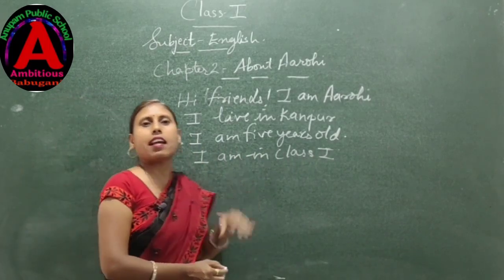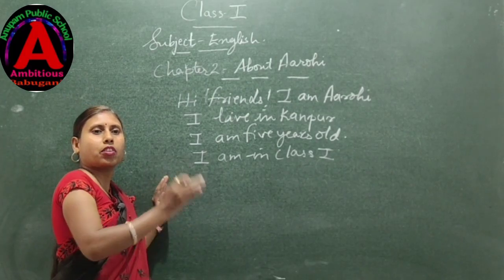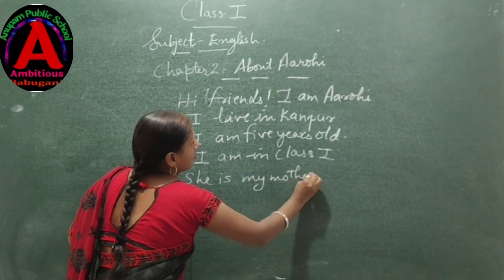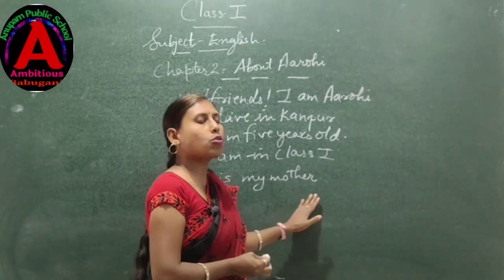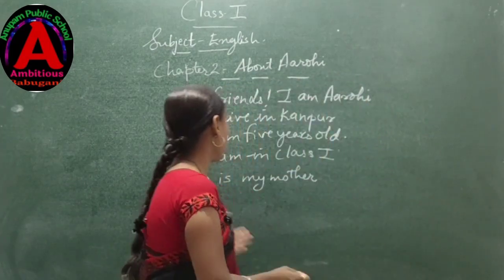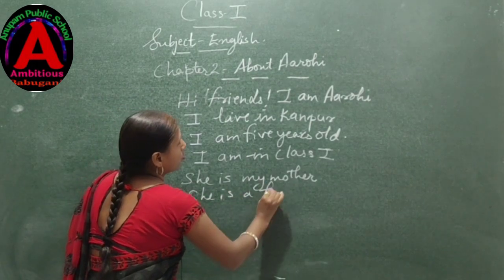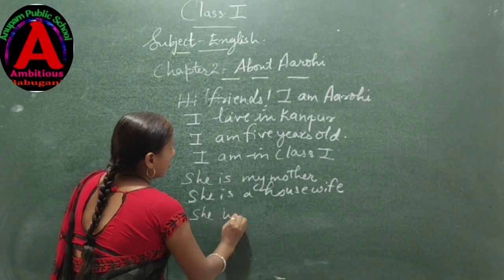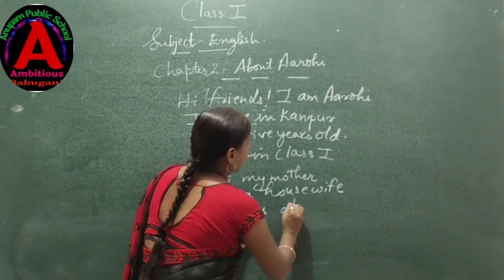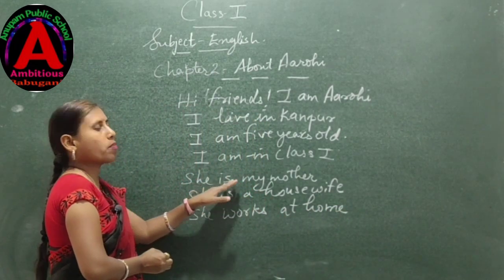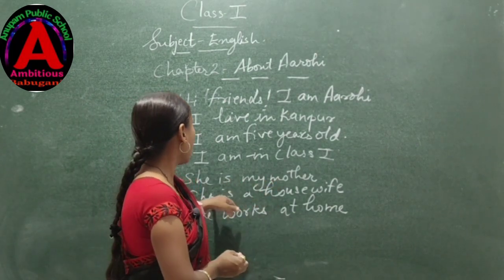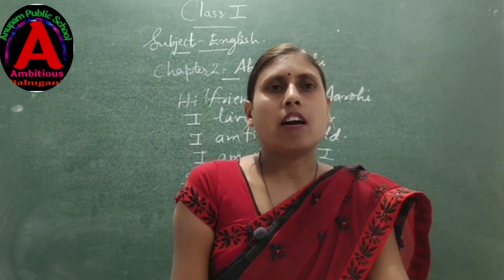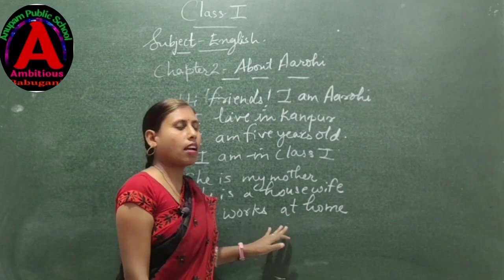The second stanza is: She is my mother. Now she is introducing her mother. Her mother is a housewife — she works hard at home. She takes care of her house and her family. Arohi's mother is very busy in her household work and she works very hard at home.